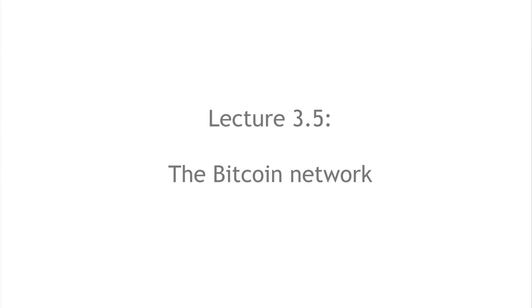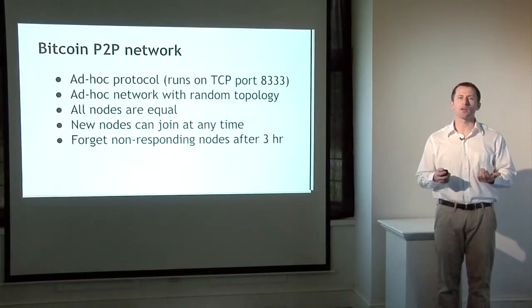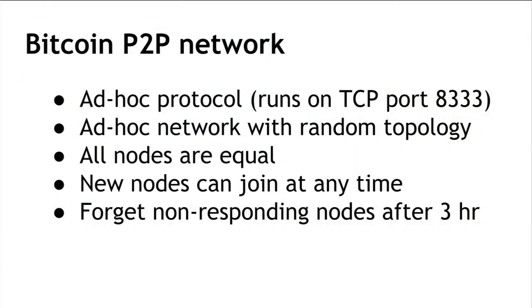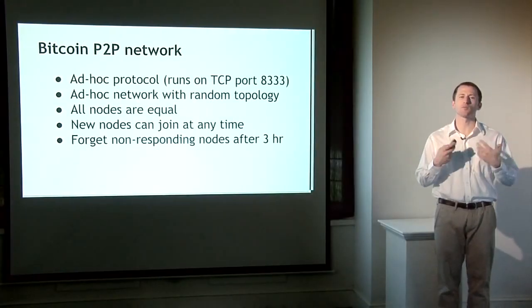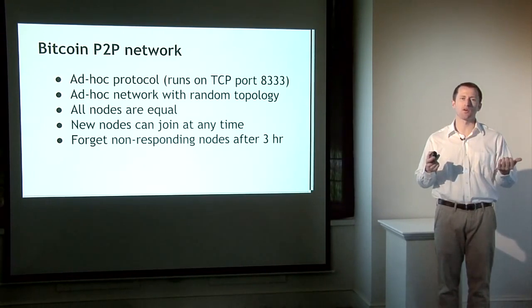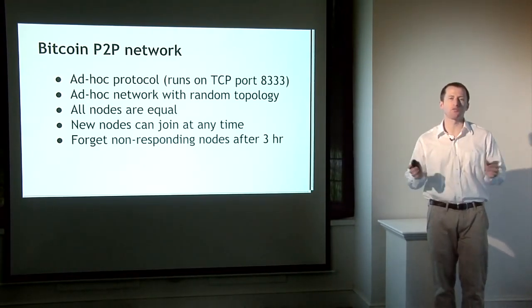We've been talking about the ability to publish a transaction and get it into the blockchain as if it happens by magic — of course, it happens through the Bitcoin network. The Bitcoin network is a peer-to-peer network where all nodes are equal — no hierarchy, no centralized special nodes, no master nodes. It runs over TCP with a random topology where nodes are randomly peered with other nodes. New nodes can join at any time — you can download the Bitcoin client today, spin up your computer as a node, and be a participating Bitcoin node with equal rights and capabilities as every other node.